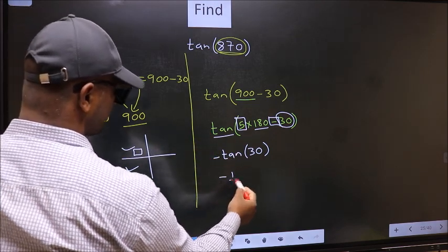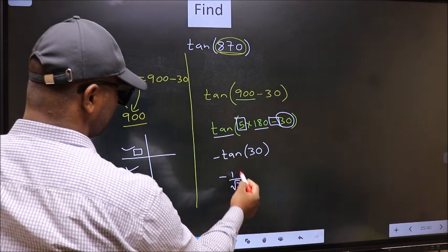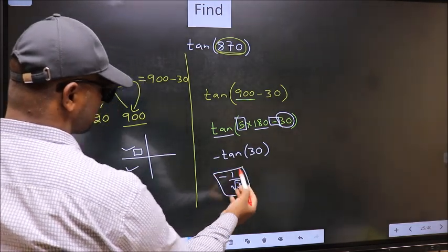So negative tan(30) is -1/√3. This is our answer.